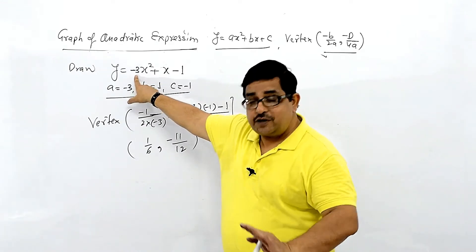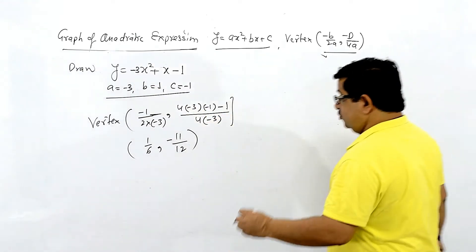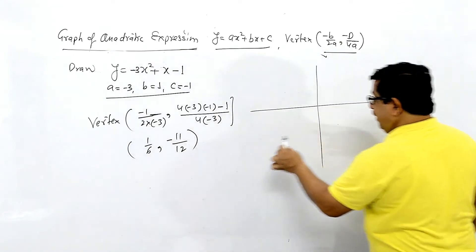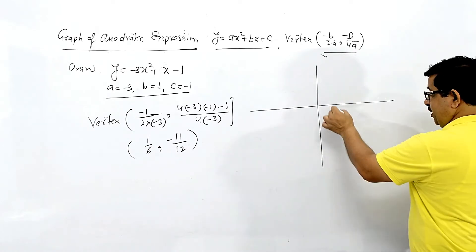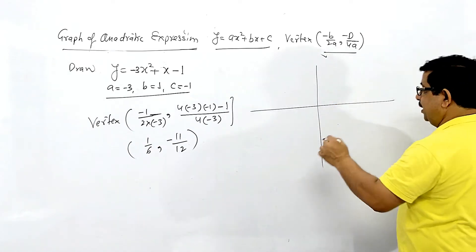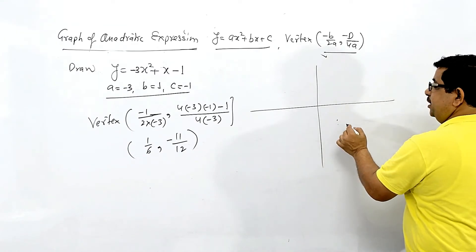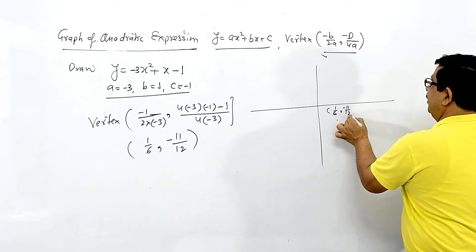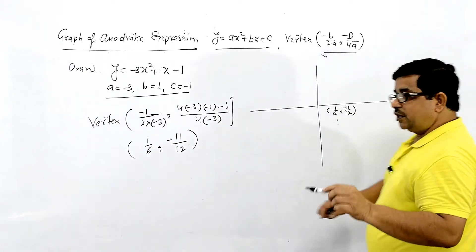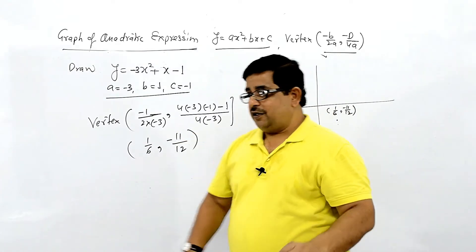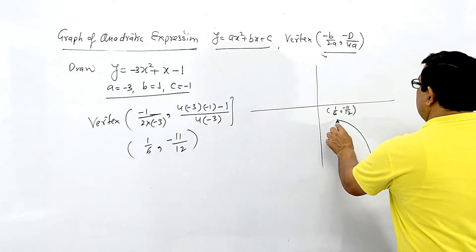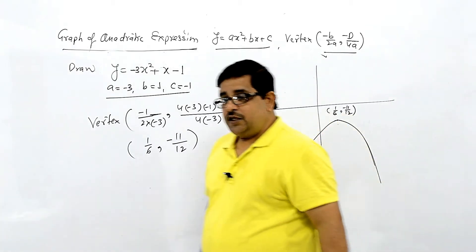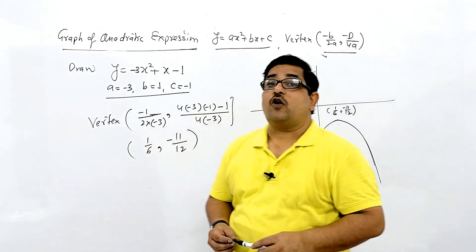Since x is positive and y is negative, the vertex is in the fourth quadrant. You can plot the point (1/6, −11/12) in the fourth quadrant, and the mouth of the parabola opens downward. The sketch of the graph is complete.